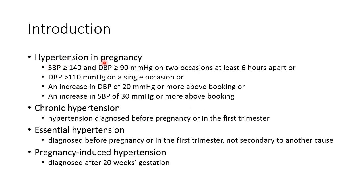Hypertension in pregnancy is defined as blood pressure greater than or equal to 140/90 mmHg on two occasions at least six hours apart, or diastolic blood pressure greater than 110 mmHg on a single occasion, or an increase in diastolic blood pressure of 20 mmHg or more above booking, or an increase in systolic blood pressure of 30 mmHg or more above booking.